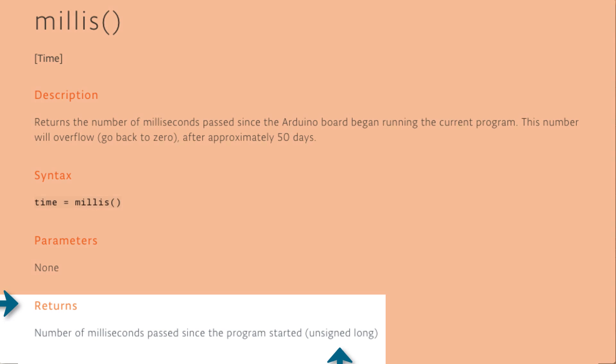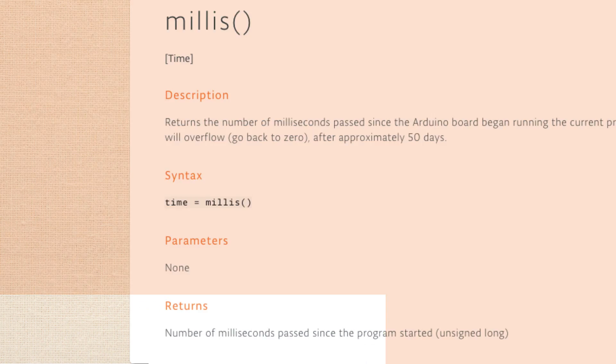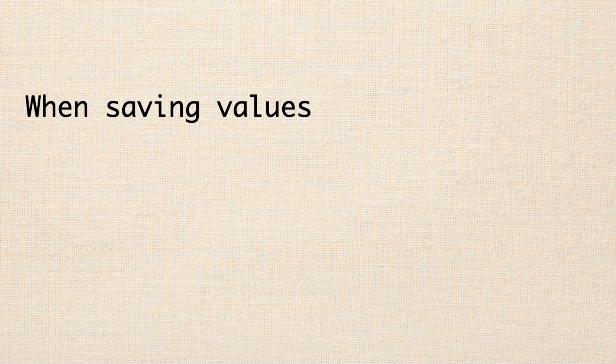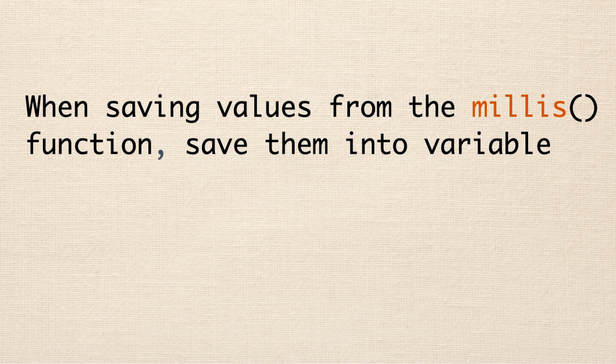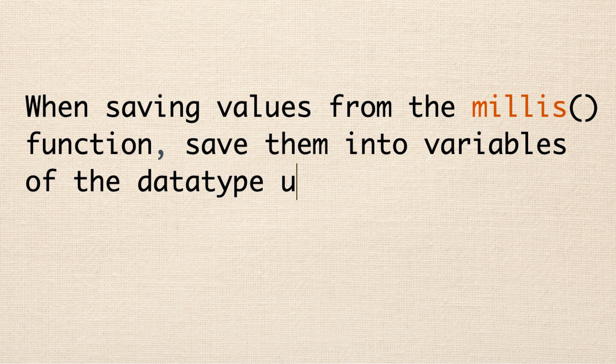Especially since if we read the documentation of the millis function, we'll see that that function returns an unsigned long. So the moral of the story is when you are saving values from the millis function into a variable, that variable should be an unsigned long.